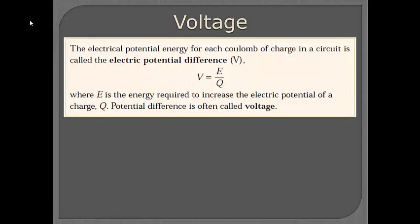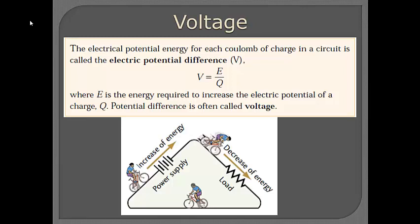Voltage or electric potential difference. There's a formula for it, which I've shown here. And it's the electric potential energy, E, which is measured in joules, divided by the charge, which is measured in coulombs. So electric potential difference has the units of volts, which is a joule per coulomb. You should write that formula down in your notes.